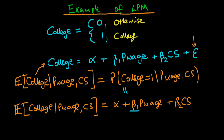So what do the coefficients beta 1 and beta 2 actually mean in this relationship? If we were to increment parental wage by one unit, so it became parental wage plus 1, then because we're multiplying by beta 1, the effect is going to be to add beta 1 onto this term. So beta 1 is the increment in probability that an individual attends school associated with a one unit change in parental wage.